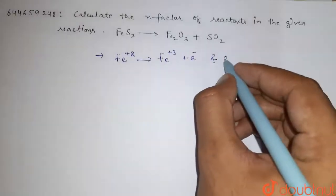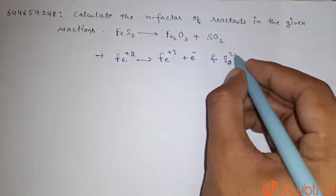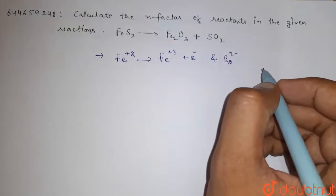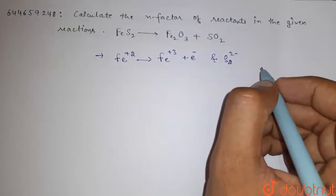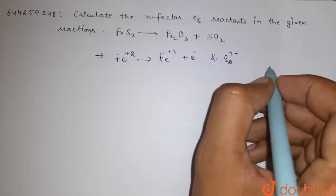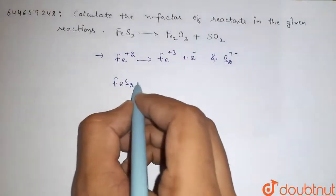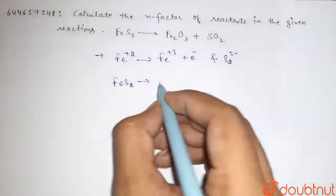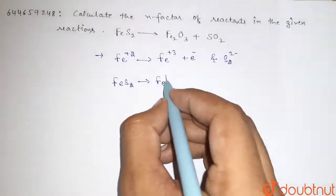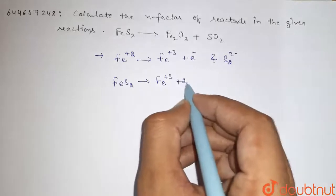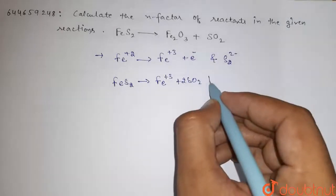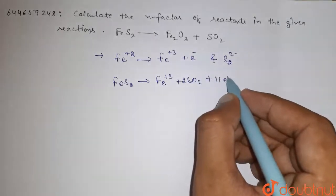And S2, 2 negative. So this means when the two equations are put together and added, then the combined equation will be FeS2 goes into Fe +3 plus 2 SO2 plus 11 electrons are released.